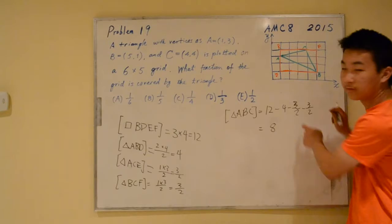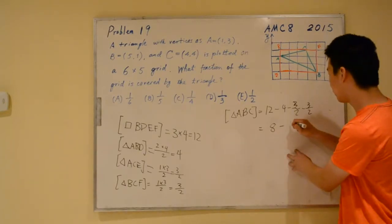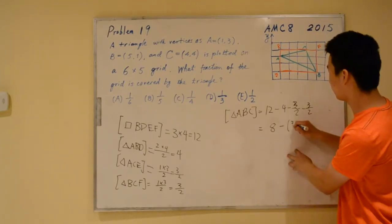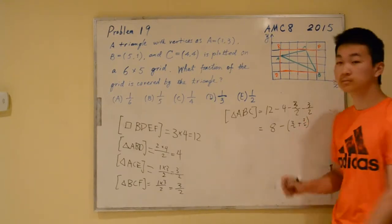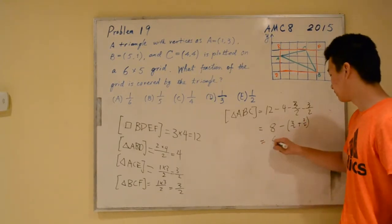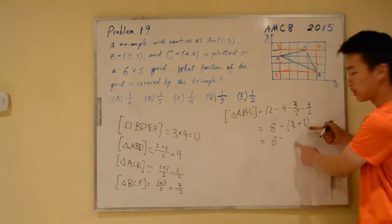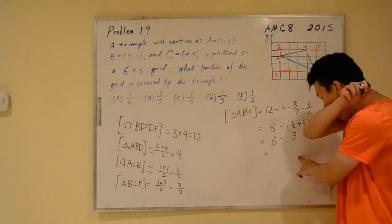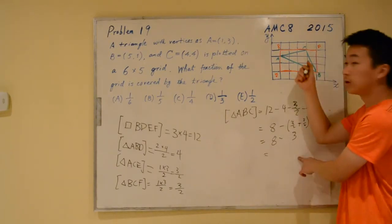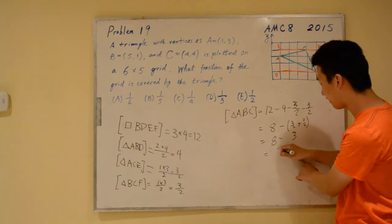This part, we factor out a negative 1. We get 3 halves plus 3 halves, which simplifies to 3. So, the area of triangle ABC is just 5.